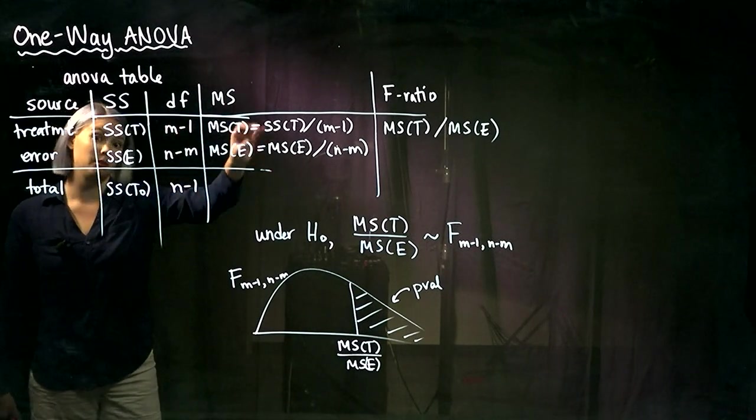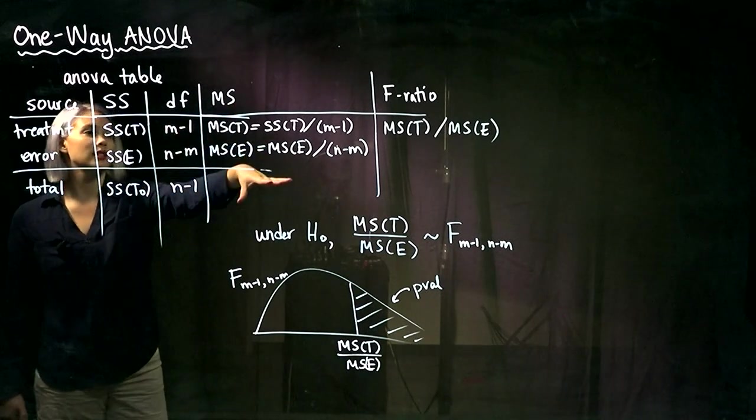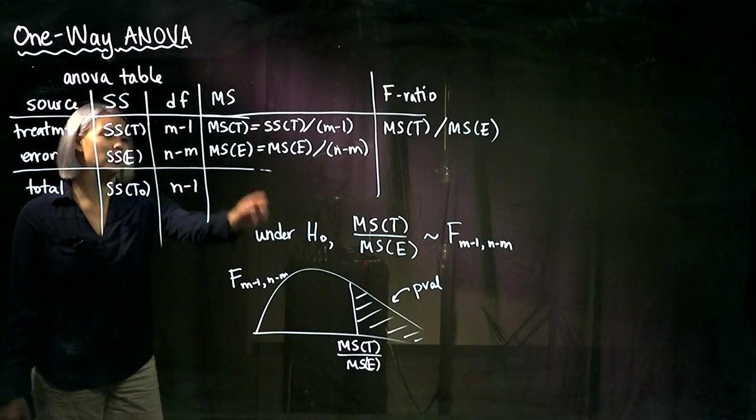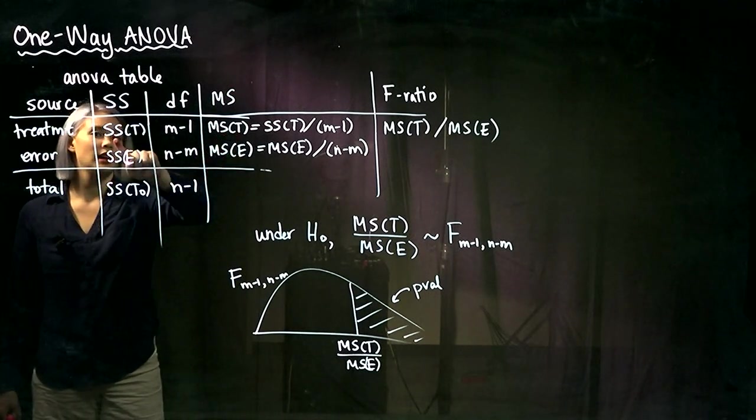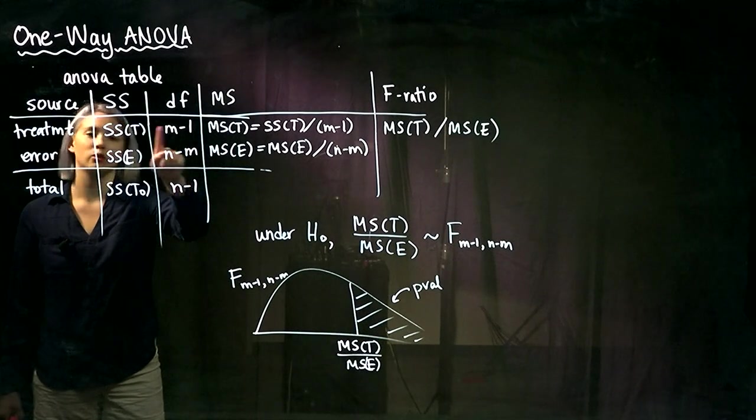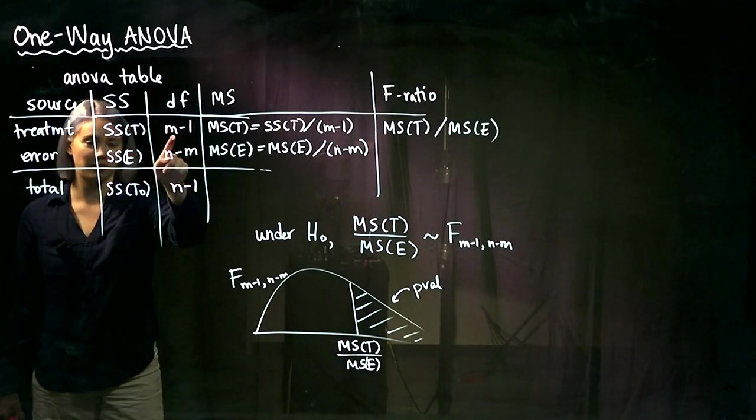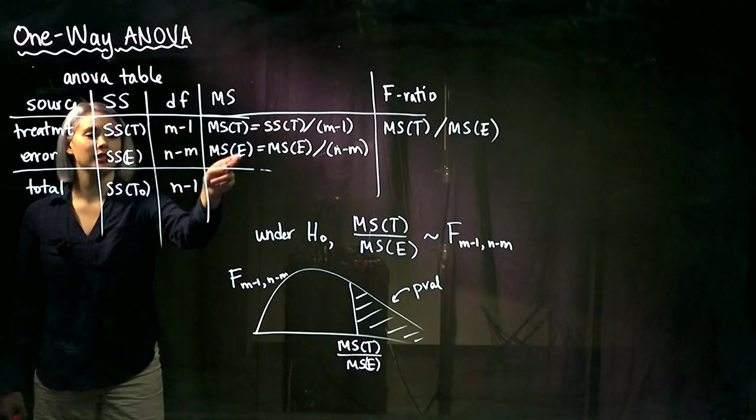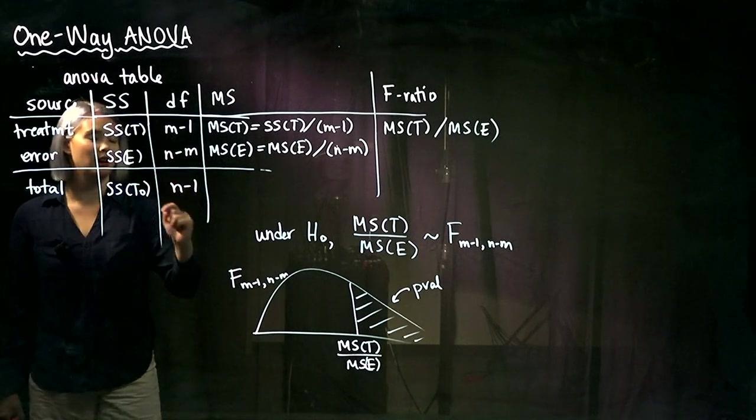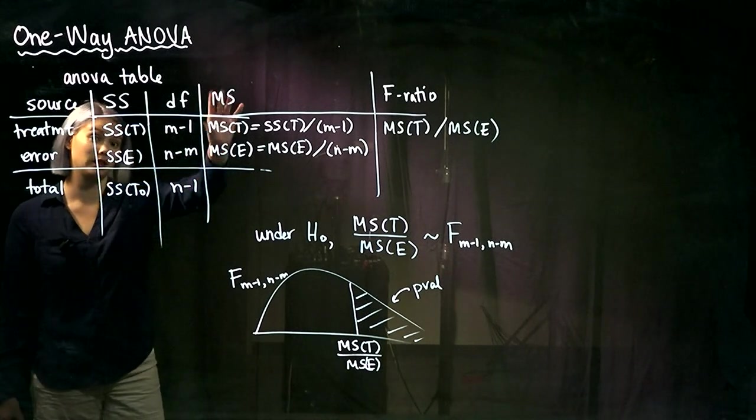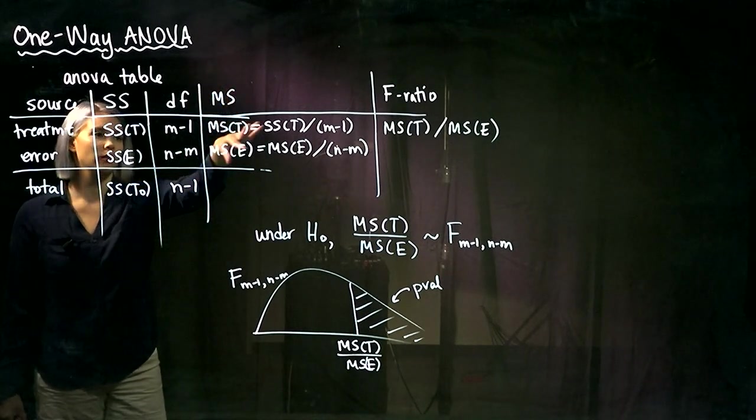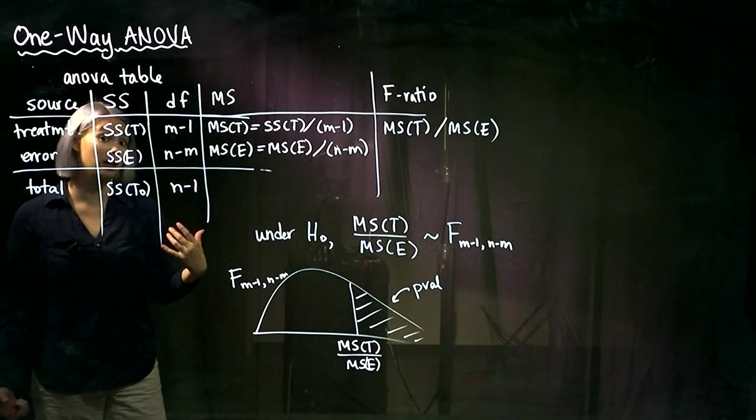And once we get to the next column, these no longer add. So here in this next column, we have the mean squares, so MST is just SST divided by M minus one. So we just take this column, divide by that column. Similarly for MSE, we take this column, divide by that column. So it's pretty easy, as long as we organize it this way, it's super easy to remember how to calculate mean squares.